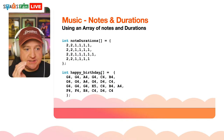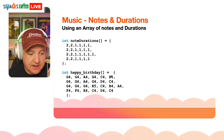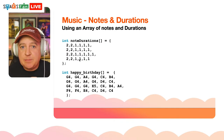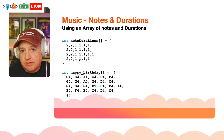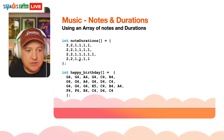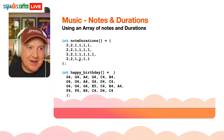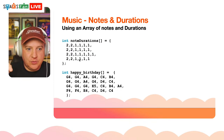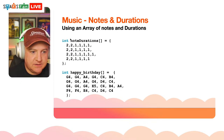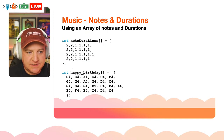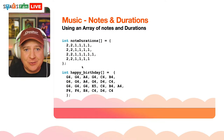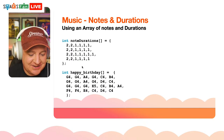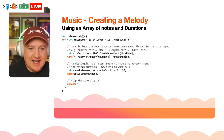We define the array as: int notes[] = { G4, G4, A4, ... }; — the square brackets indicate it's an array, and curly braces hold the values. Note durations are stored in a separate array. The duration value corresponds directly to the note at the same position — so the first duration value corresponds to the first note G4, the second to the second note, and so on.